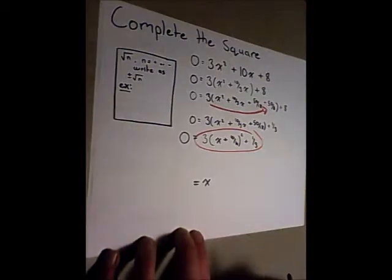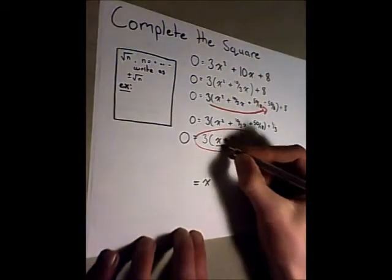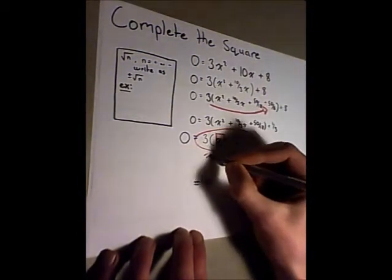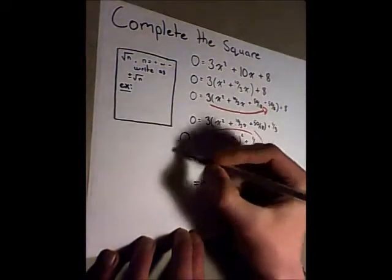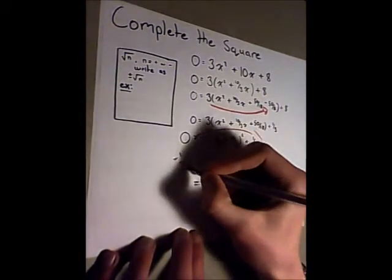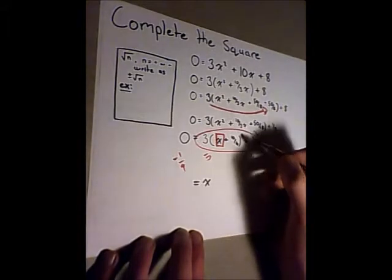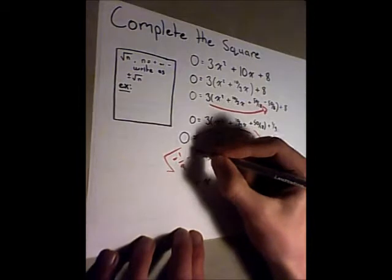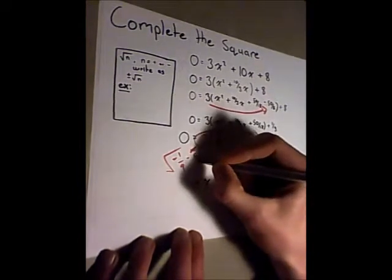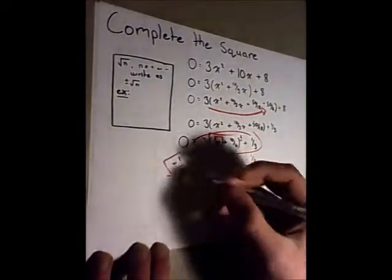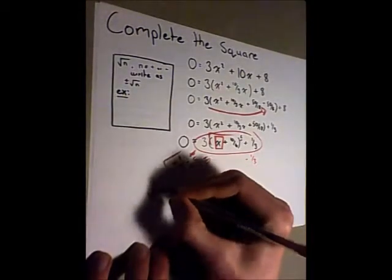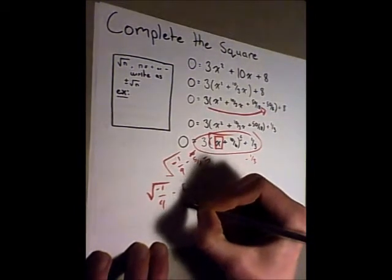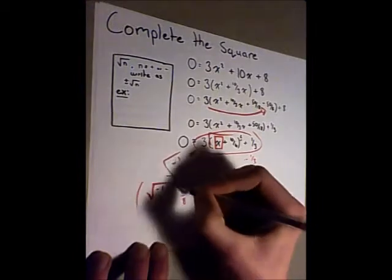But how do we find our x-intercepts from here? Well, we need to solve for this x-variable. So we'll go minus 1 over 3 divided by 3, which will give us negative 1 over 9. Then we square this to get rid of that. And we subtract 10 over 6, or we could write it out as 5 over 8. So now we're left with an equation that looks like this. The square root of negative 1 over 9 minus 5 over 8. And here we have this in brackets.